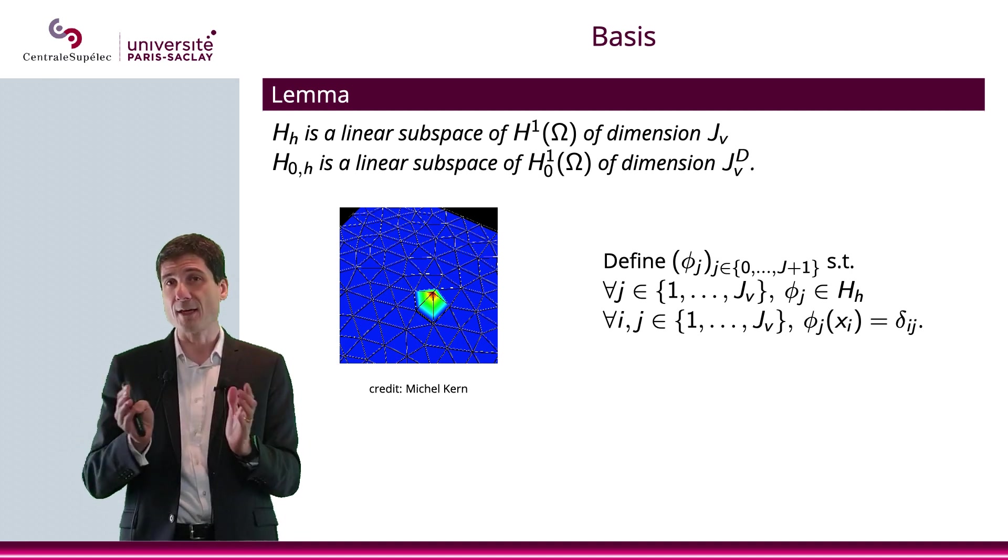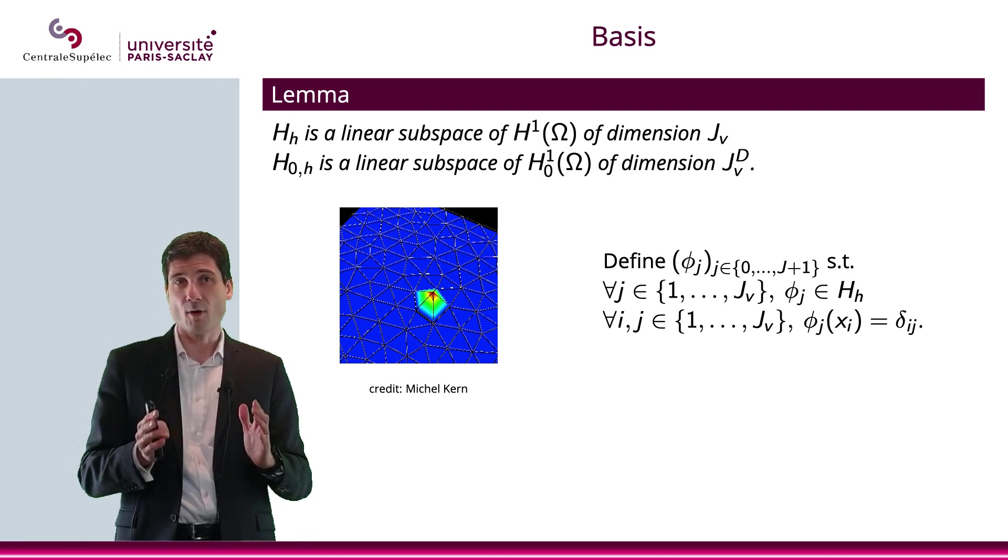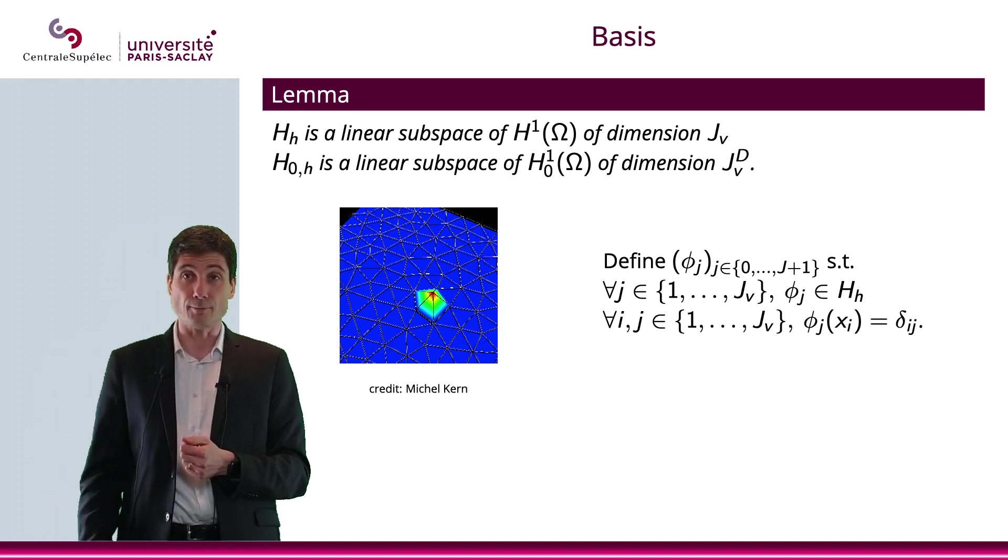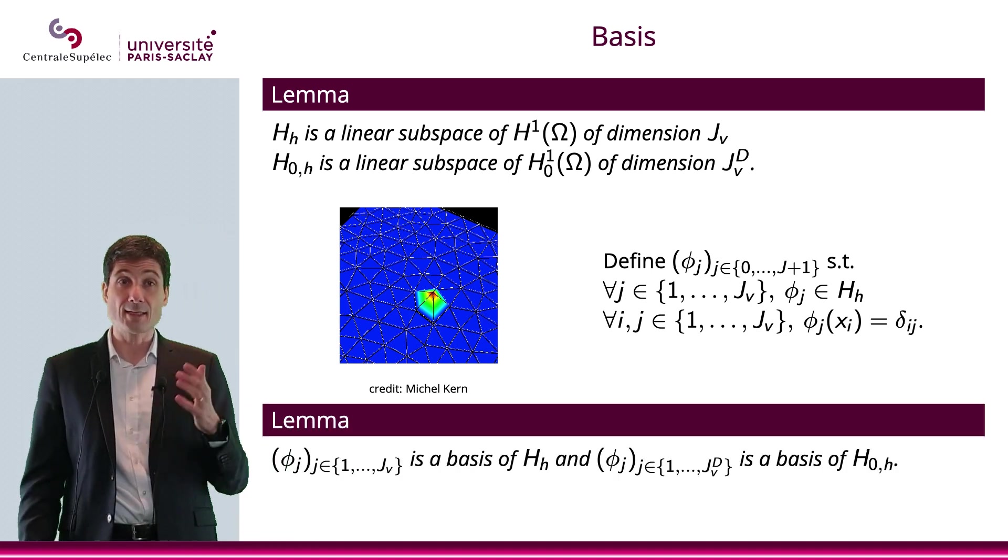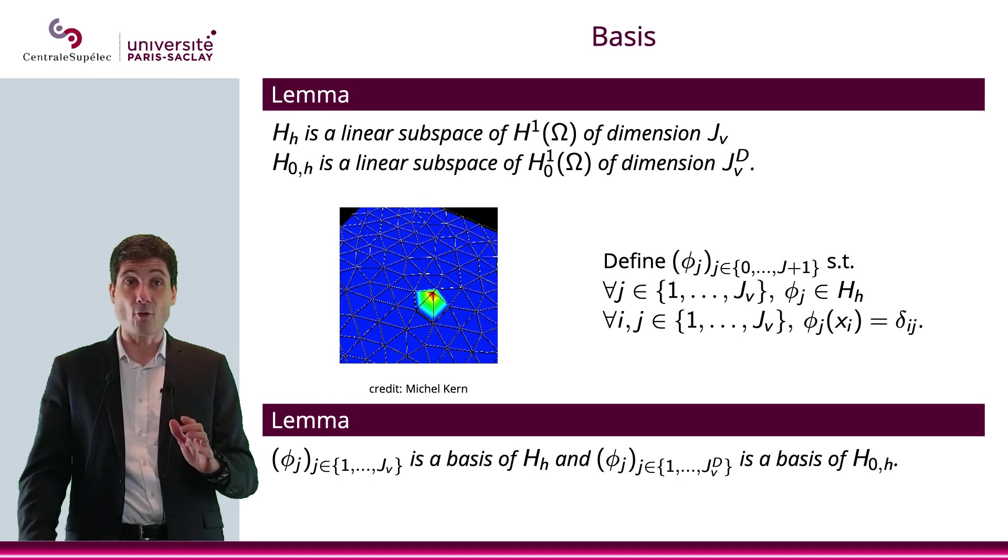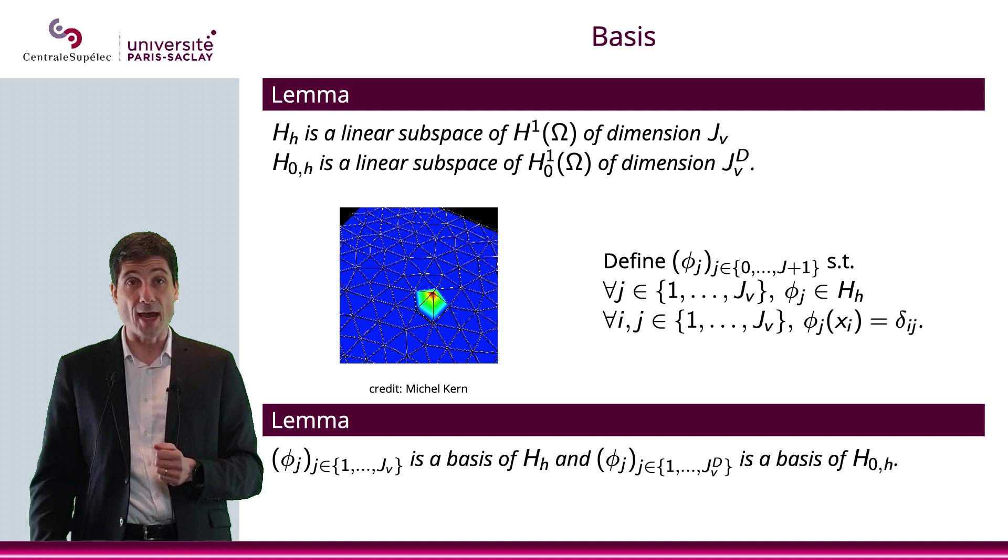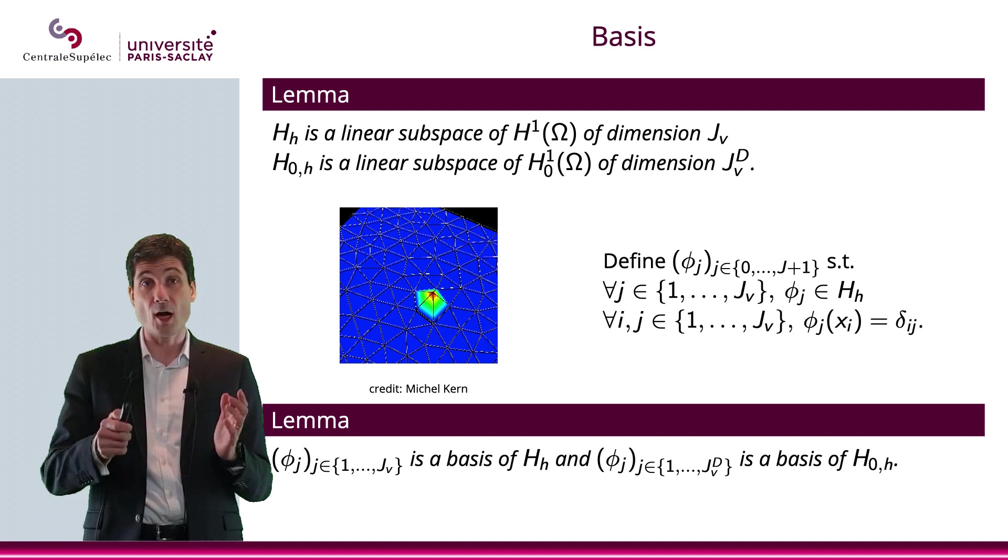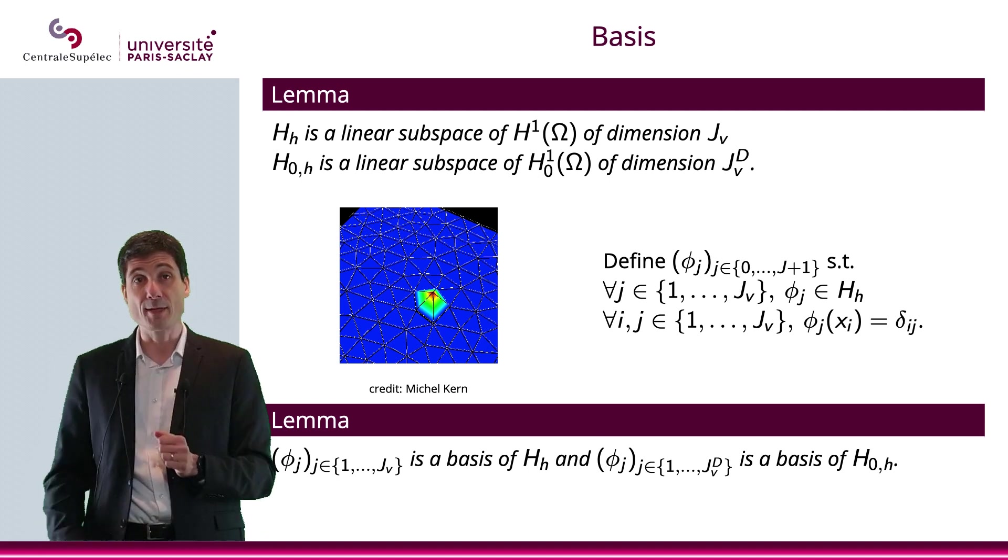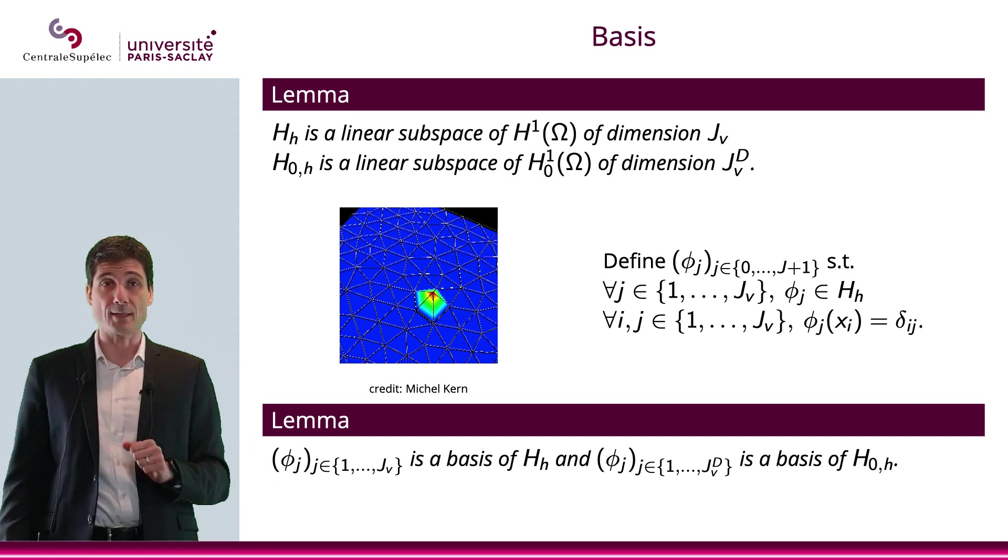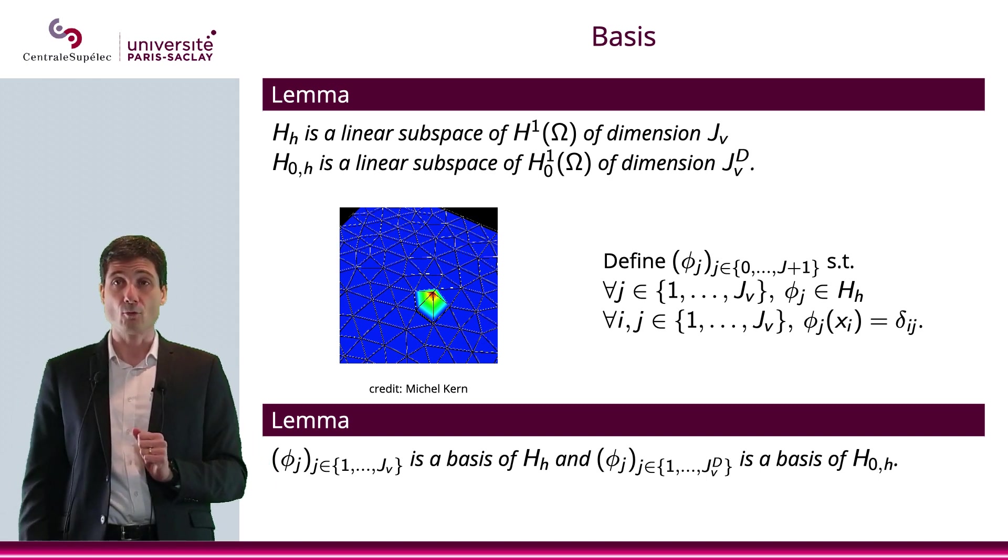So if you understood how things work in dimension 1, well, that is basically a generalization in dimension 2. Now, what we're saying is that phi J for all from 1 to JV will be a basis of HH, and if you consider 1 to JVD, that will be a basis of H0H. Obviously, you have to number your bases properly for this to work.